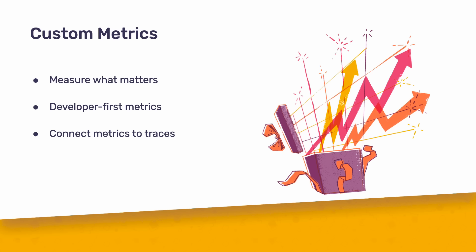So how does it work? You measure what's important to you — be it business metrics, speed component metrics, anything that's important to you, you can measure. We are then correlating those metrics against traces and replays so you can dive deeper into what exactly is going wrong. Additionally, this is a developer-first metrics product, which means that we also record things like code locations so you understand where the metrics are coming from.